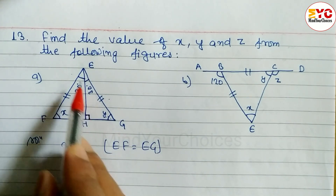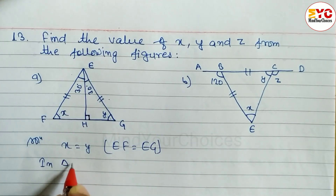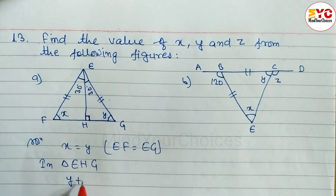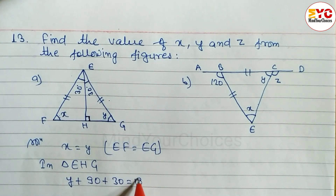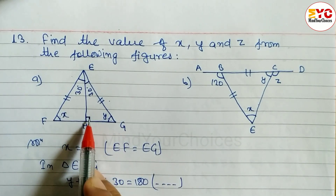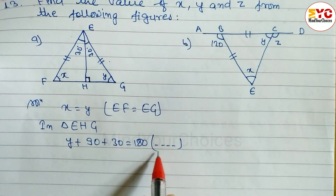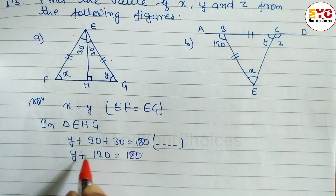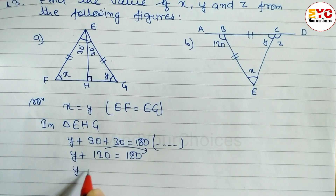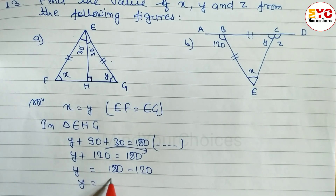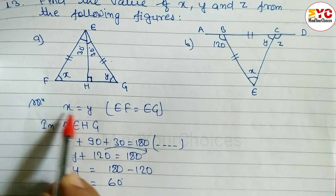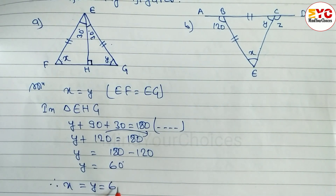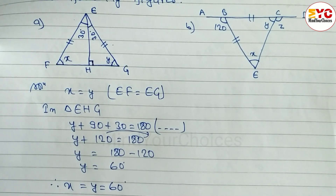The base angles of an isosceles triangle are equal. Now this is a sign of 90 degrees. So in triangle EHG, y plus 90 plus 30 is equal to 180 degrees — reason: the sum of angles of a triangle. Y plus 120 is equal to 180, so y is equal to 180 minus 120, giving y equal to 60 degrees. Since x equals y, x is also 60 degrees. Therefore x is equal to y is equal to 60 degrees.